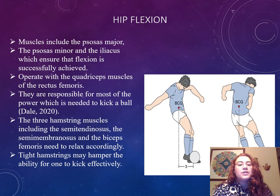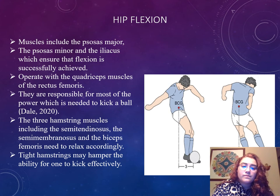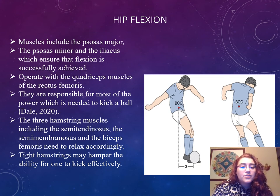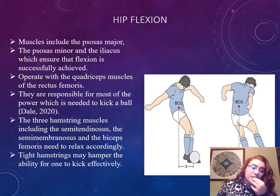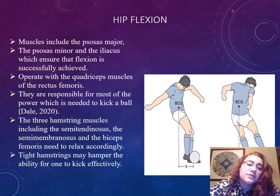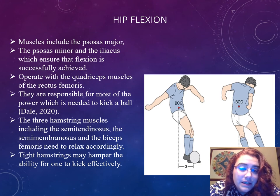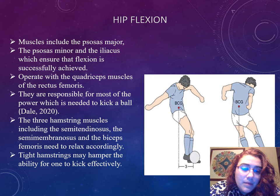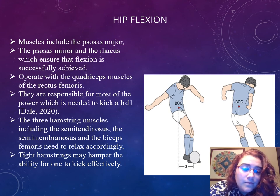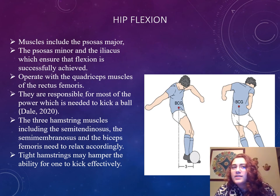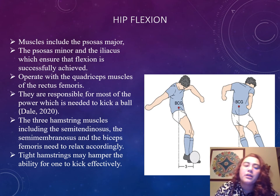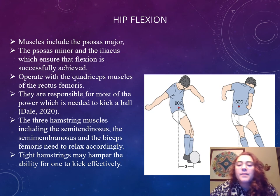So hip flexion — muscles that include the psoas major and minor and the iliacus ensure flexion is successfully achieved. It operates with the quadricep muscles of the rectus femoris; they are responsible for most of the power which is needed to kick a ball. The three hamstring muscles, including the semitendinosus, the semimembranosus, and the biceps femoris, need to relax accordingly. Tight hamstrings may hamper the ability to kick effectively and do cause injury — we see a lot of pulled hamstring muscles and tight cramps, especially when it's cold.